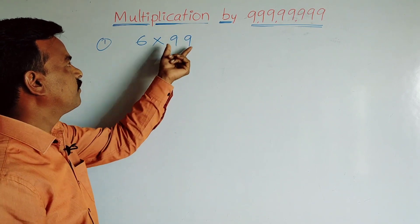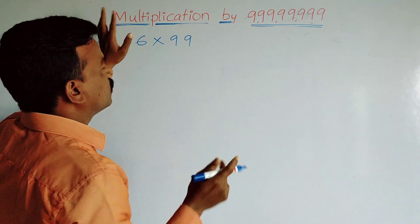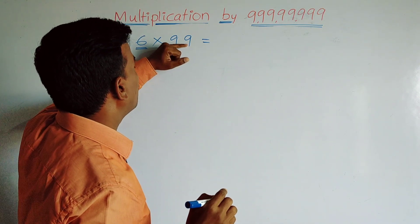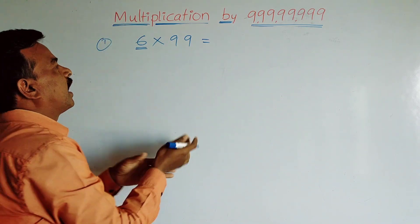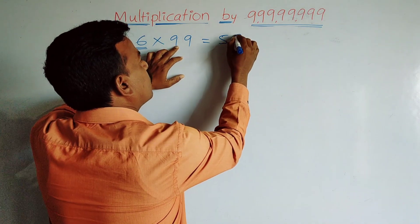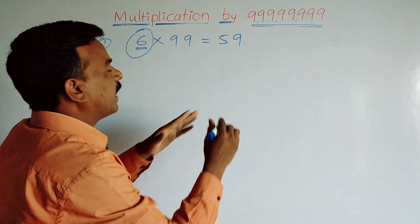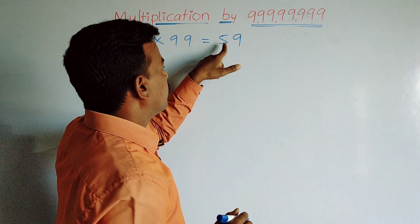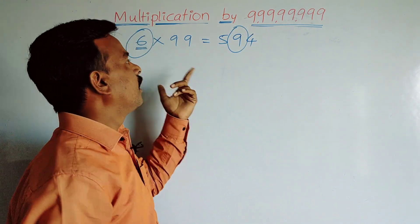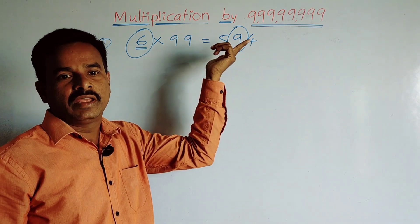Take one example: 6 × 99. The number of nines is 2, which is double the number of digits in multiplicand, 1. So we can apply this method. First, 6 minus 1 equals 5. Now here is very important — in this type of multiplication we have to write extra nines in the middle. There is 1 digit in multiplicand, so we write one 9 in the middle. Then subtract 5 from 9: 9 minus 5 equals 4. The answer is 594.